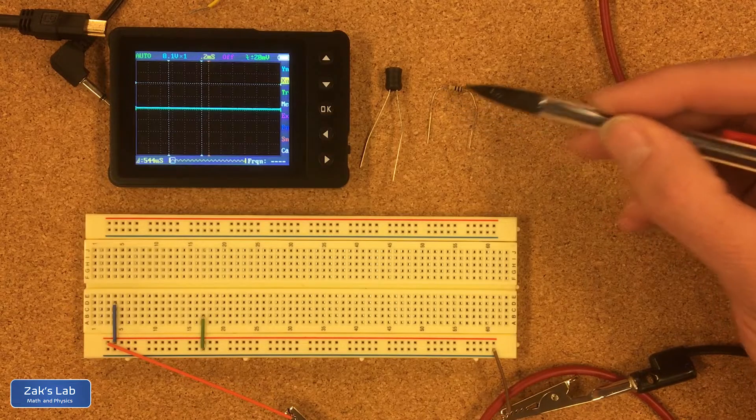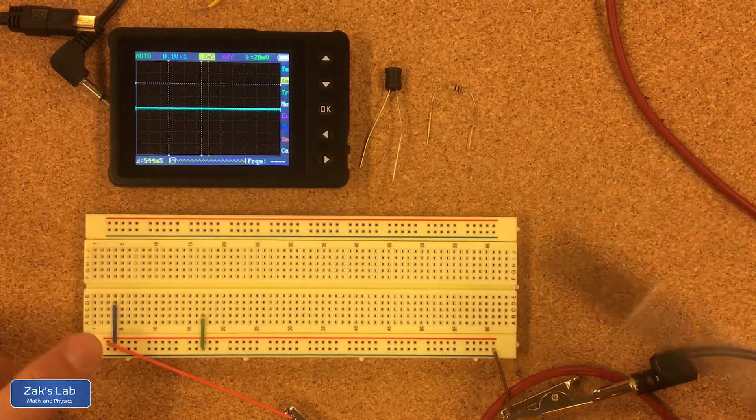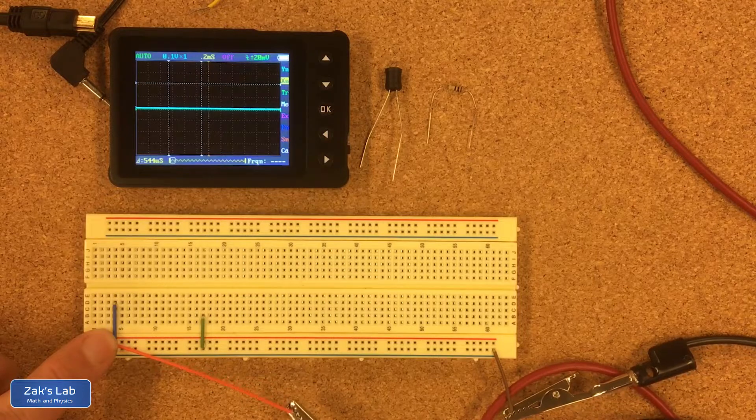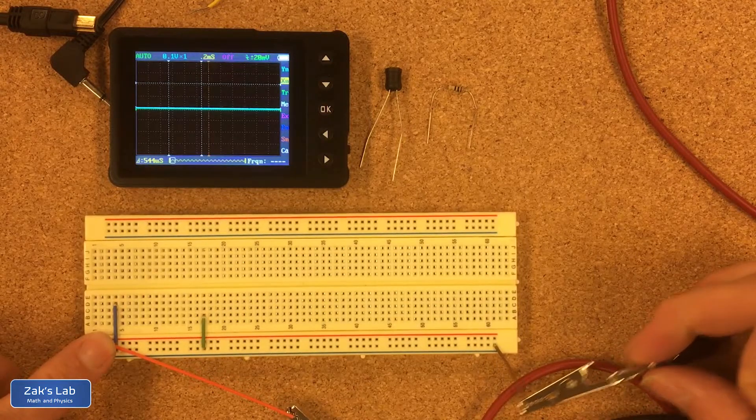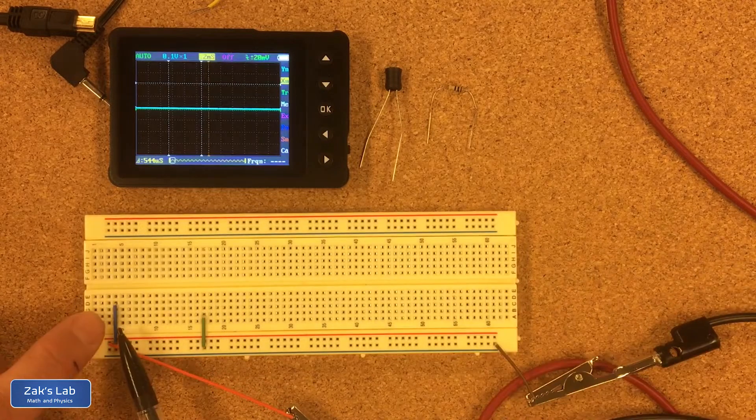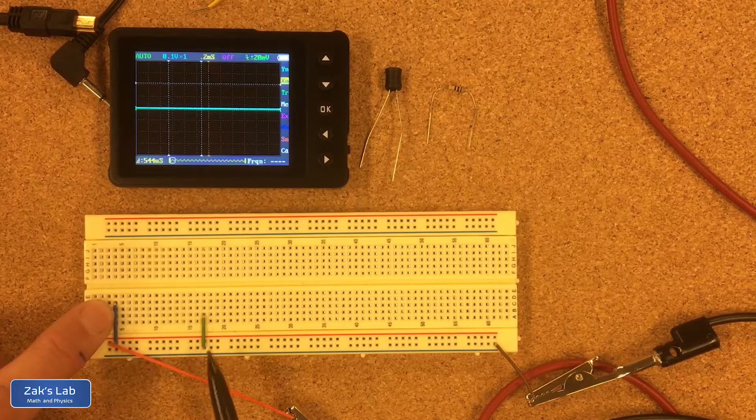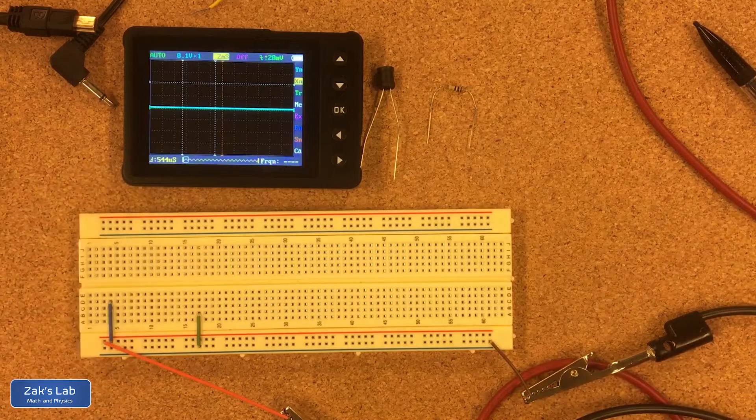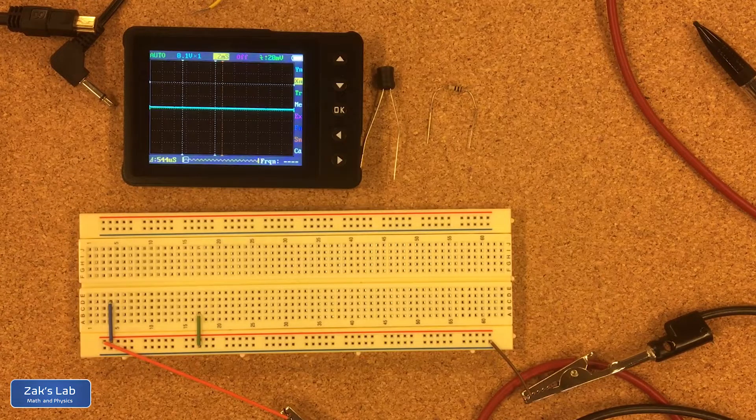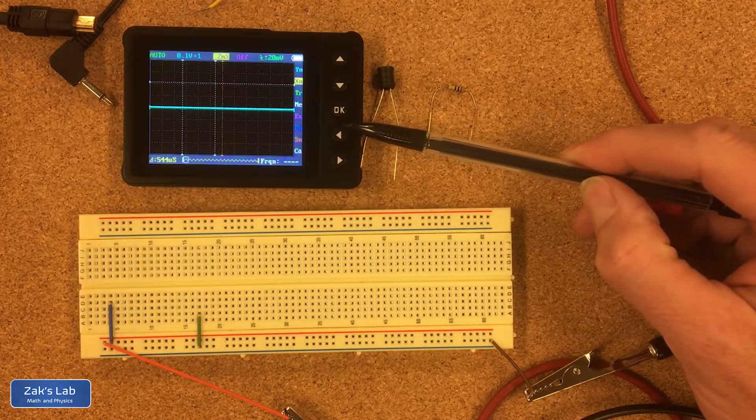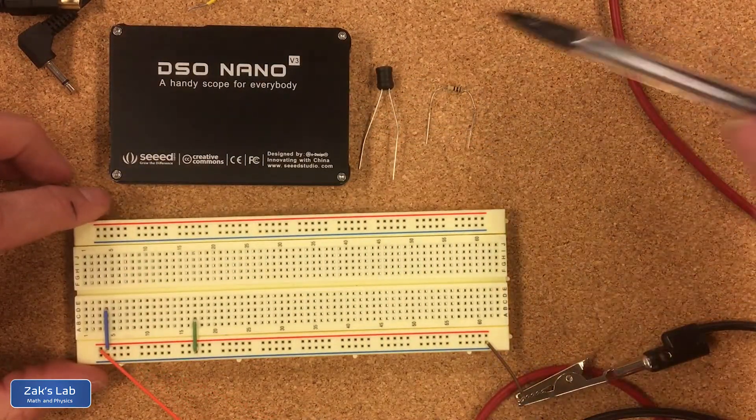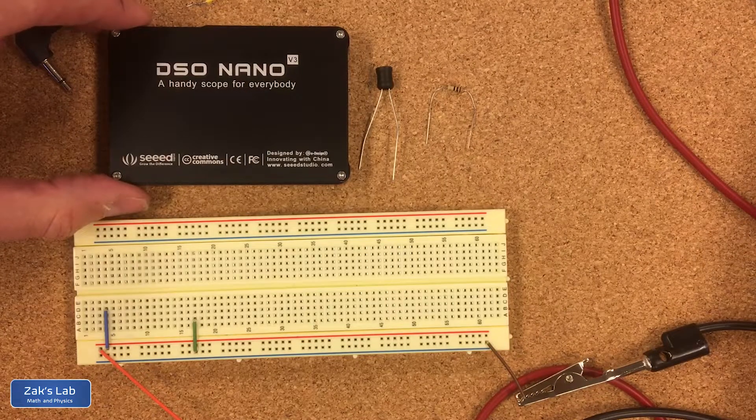You can see we've got the breadboard set up already with the long red strip powered, connected to the positive end of the power source, and the long blue strip connected to ground. I've already jumped over from the red strip into the breadboard and from the blue strip into the breadboard. We're going to apply a square wave across this and we're reading the output signal using this compact oscilloscope, a Seeed DSO Nano v3. They sell for less than a hundred dollars and do the job for just about anything you'd want in a teaching lab.